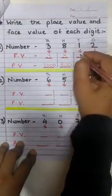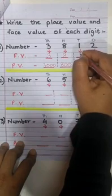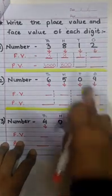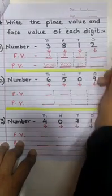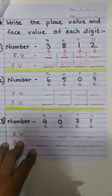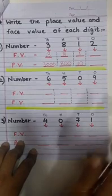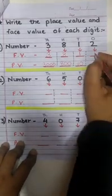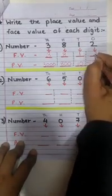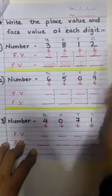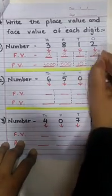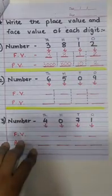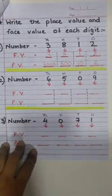The face value of 1 will be 1, but the place value will be 10 as it is under the column of 10s. Now, the face value of 2 will remain 2, while the place value will also be 2 because it is under the column of 1s. Easy, right?